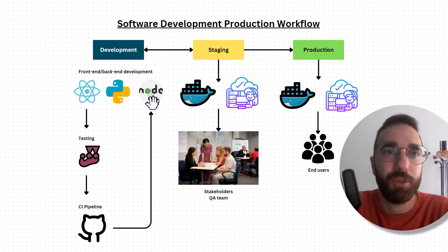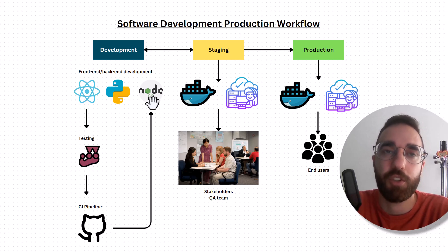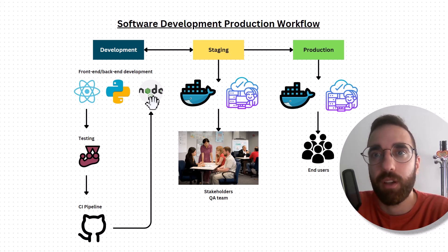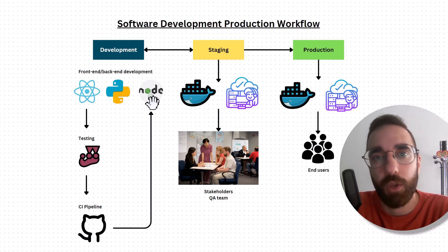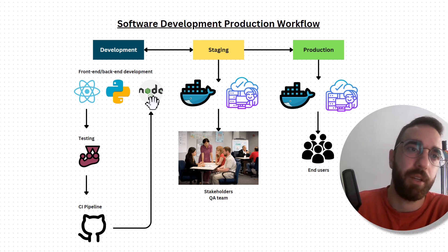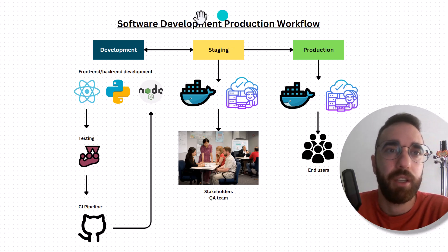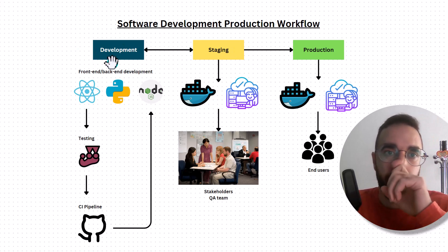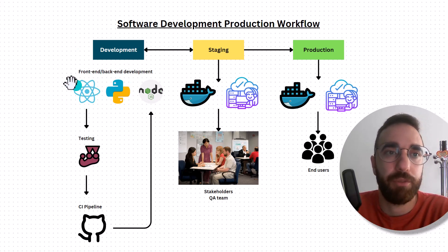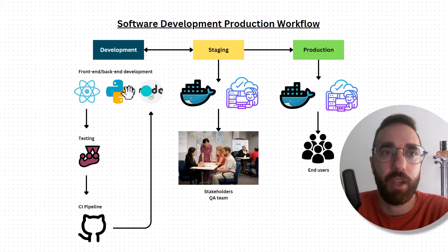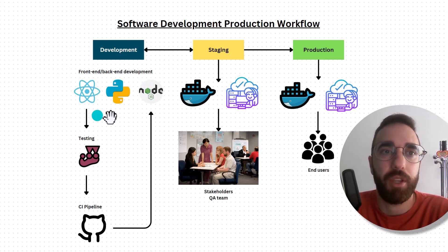I want to discuss the software development production workflow from the development up to the production phase. Let's assume we have a company. Inside this company, there are different teams in the development phase — front-end developers, back-end developers, teams working on React, Python, or Node.js.